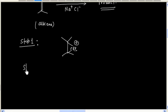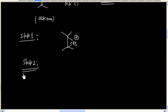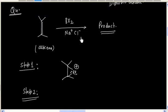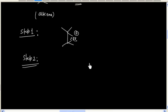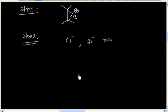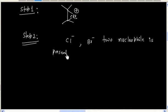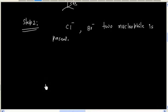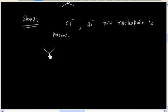But in the next step, we have two nucleophiles that can attack. We have Cl⁻ and we will also have Br⁻. So two nucleophiles are present. In this case, we will have two possible products.